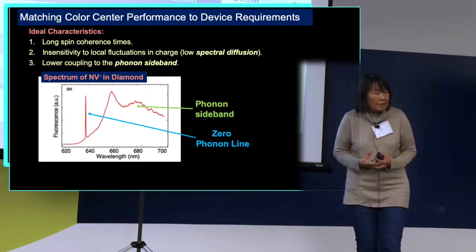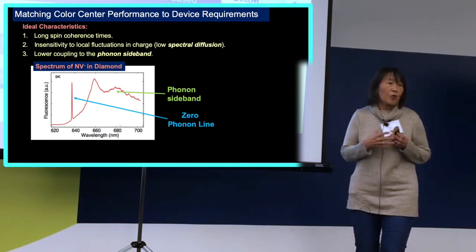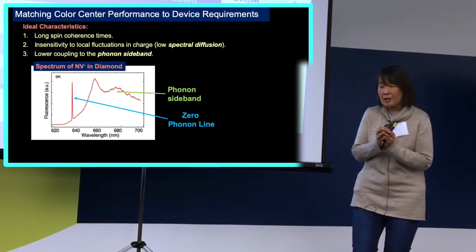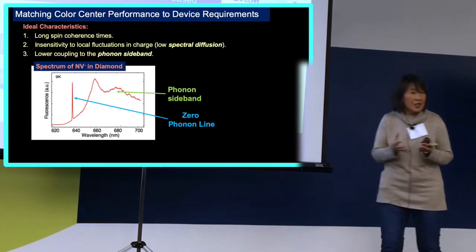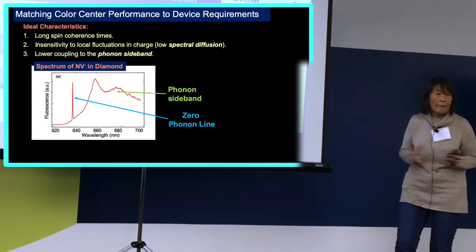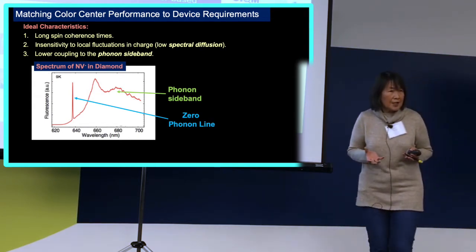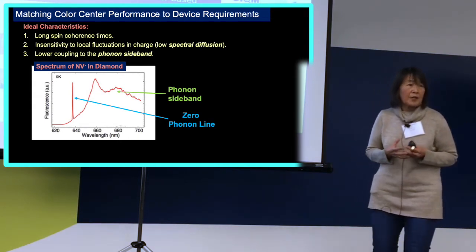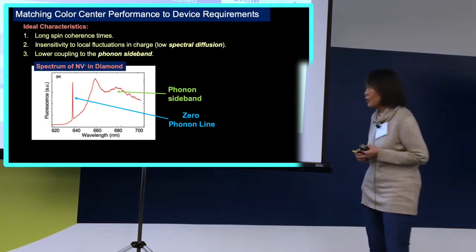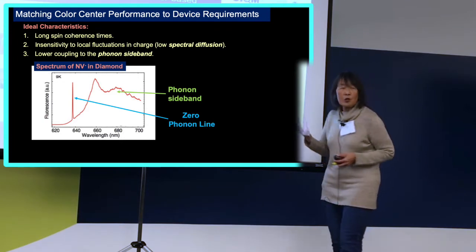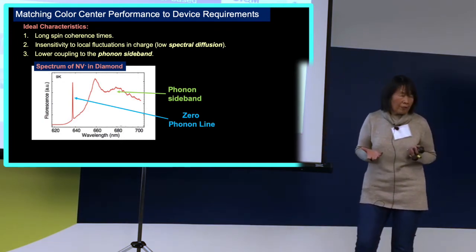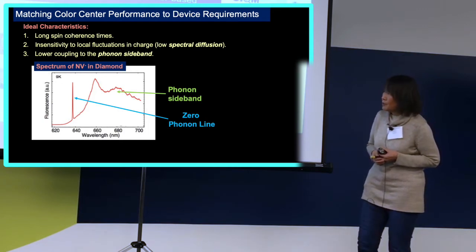Because there's a variety of choices, the frontier of defect states in wide bandgap materials is beginning to open up so that the community realizes there is far more than just NV minus in diamond. The community is looking beyond not only in diamond, but in a wide variety of other wide bandgap materials.